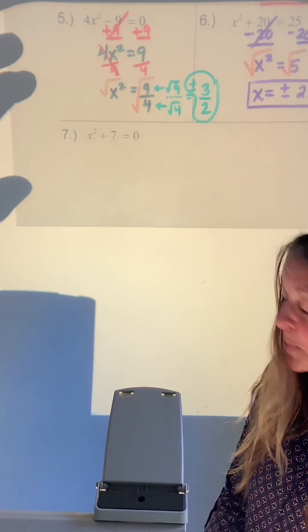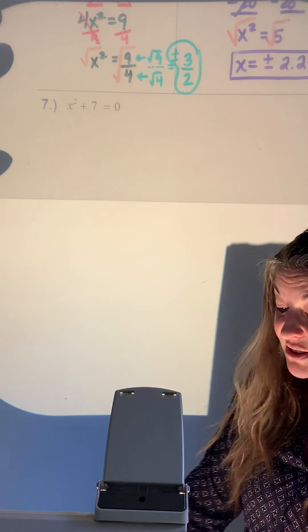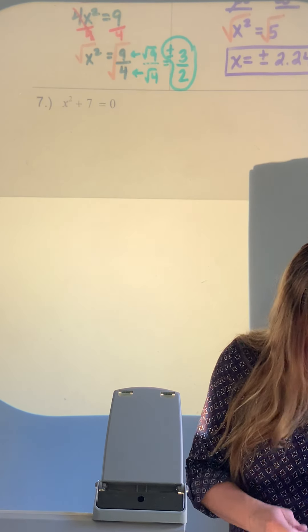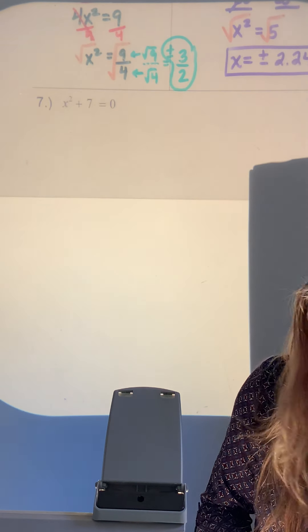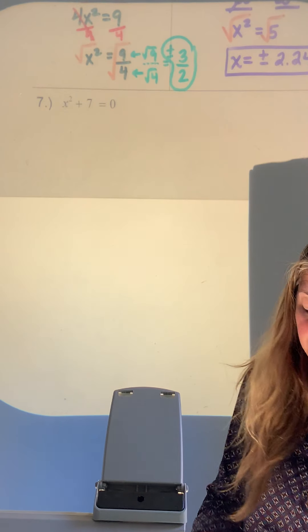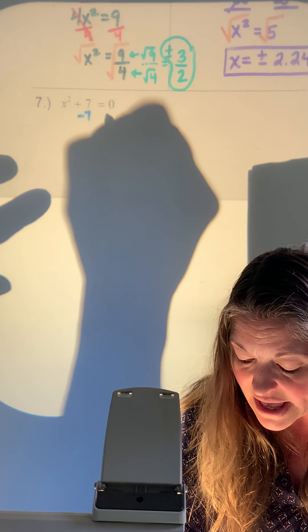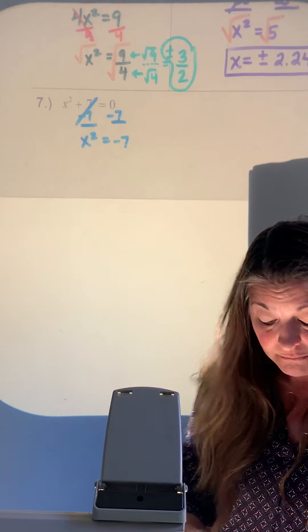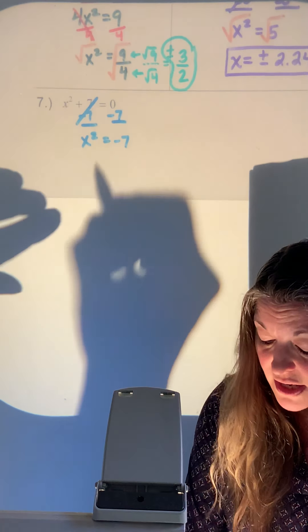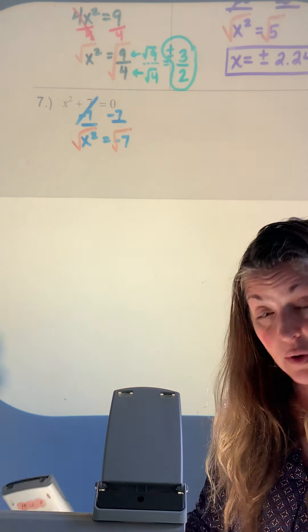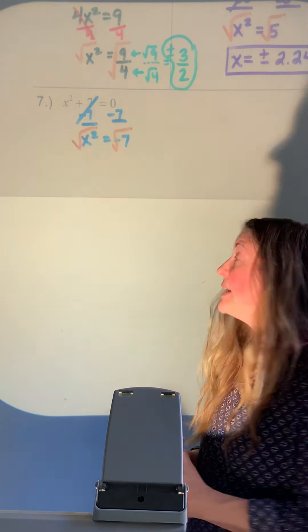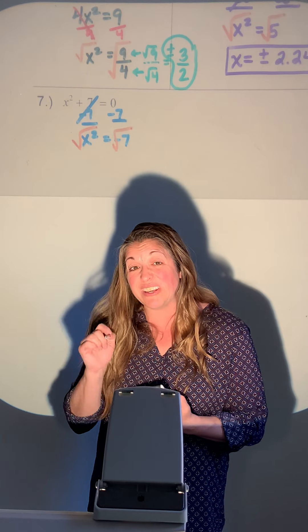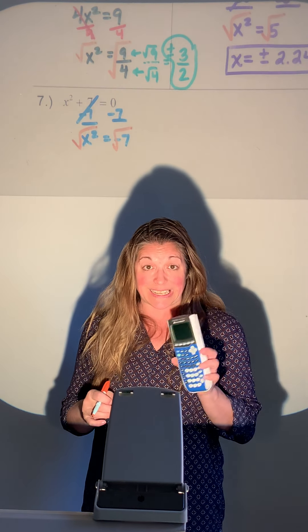For number 7, right away I can see 7 is not a perfect square — things might get ugly. Subtract 7 from both sides: x squared equals negative 7. 7 is not a perfect square. When I'm ready to square root and I put in negative 7, I get an error.